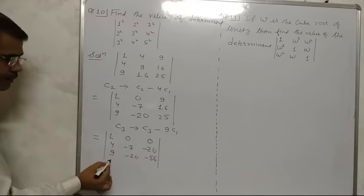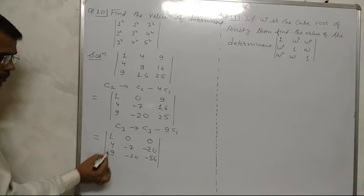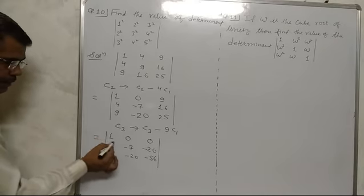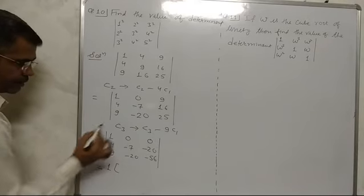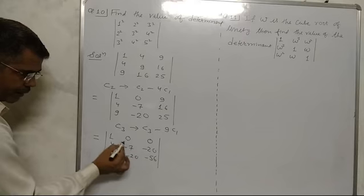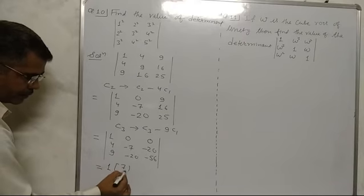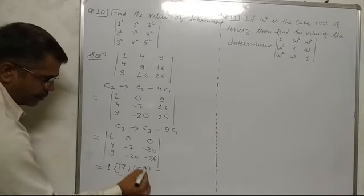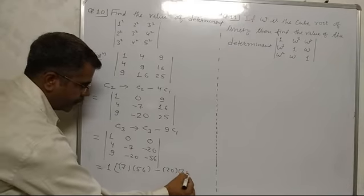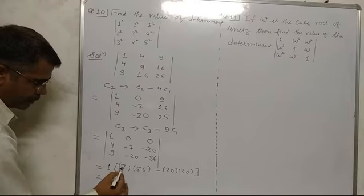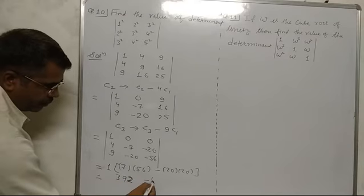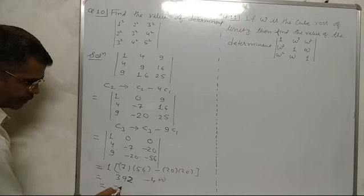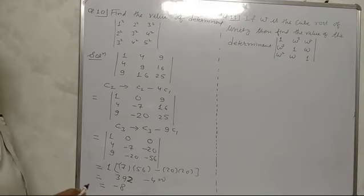Expanding the determinant from the first element, 1 as it is, deleting the column and row. We get minus minus plus: 7 times 56 gives 392, minus 20 times 20 gives 400. So 392 minus 400 gives minus 8. Our answer is minus 8.